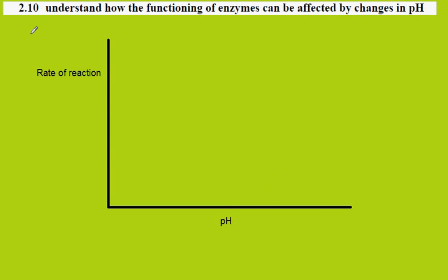IGCSE Biology, syllabus statement 2.10: the effect of pH on an enzyme reaction. On the y-axis we're measuring the rate of reaction — how quickly the reaction is proceeding — and on the x-axis we're changing the pH.